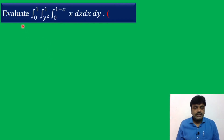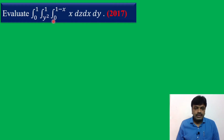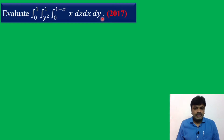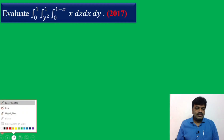Evaluate integral 0 to 1, integral y-squared to 1, integral 0 to 1 minus x, x dz dx dy. This is a 2017 problem, and it is for 7 marks — so it is an important problem. Let us see the solution.